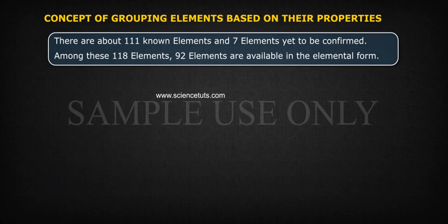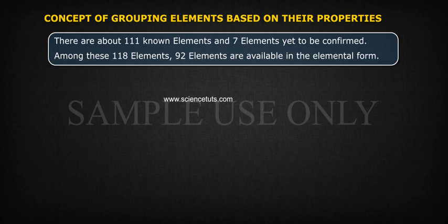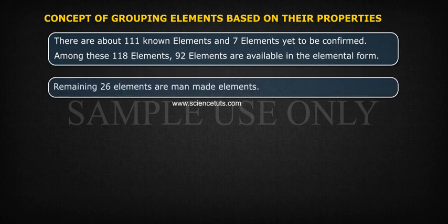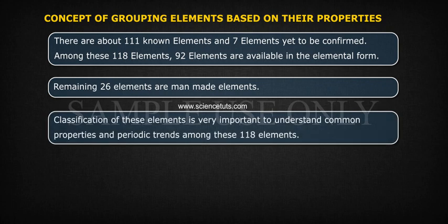There are about 111 known elements and 7 elements yet to be confirmed. Among these 118 elements, 92 elements are available in the elemental form, and the remaining 26 elements are man-made elements. Classification of these elements is very important to understand common properties and periodic trends among these 118 elements.